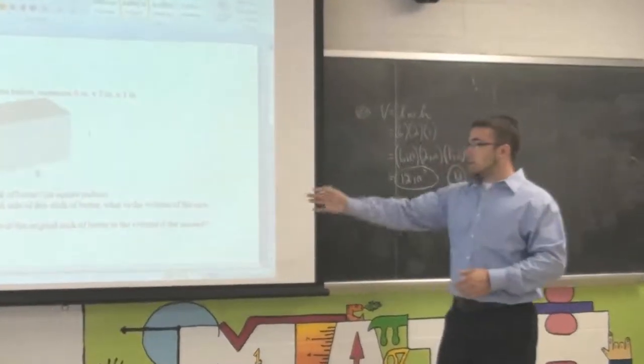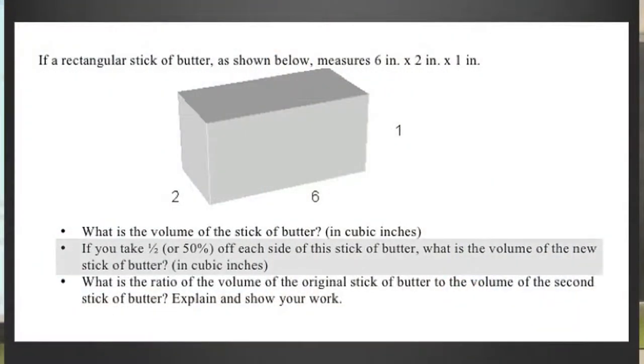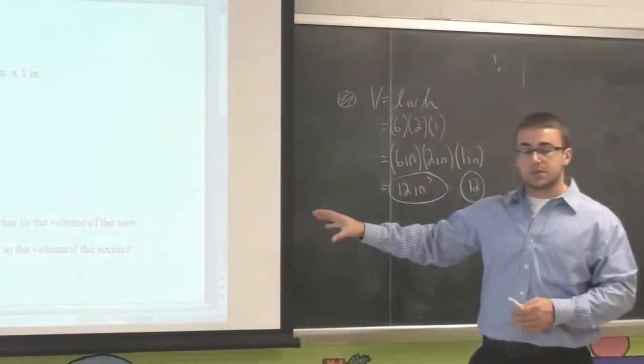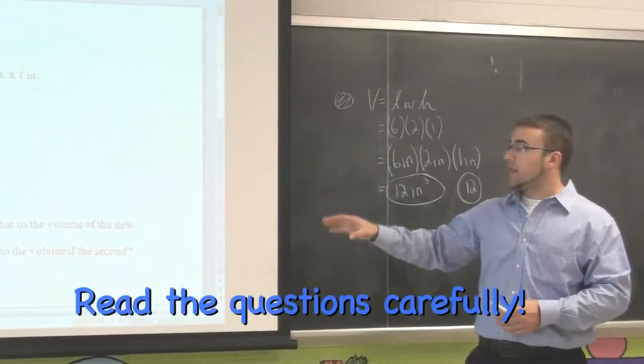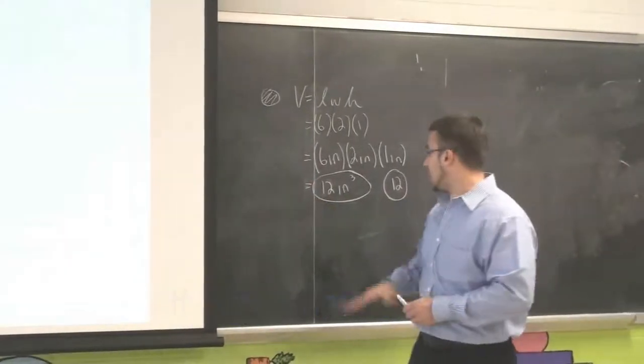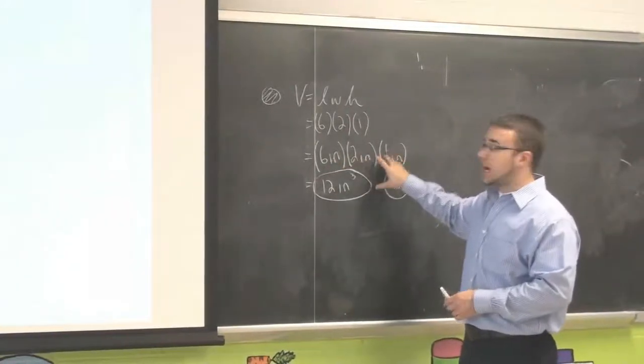Moving on to the second bullet. If you take half or fifty percent off each side of this stick of butter, what is the volume of the new solid? Now it's imperative that when you are reading the open-ended questions that you read them very, very carefully. Because in this instance it's saying if you take half off each side, not half off the volume, but rather half off each side.